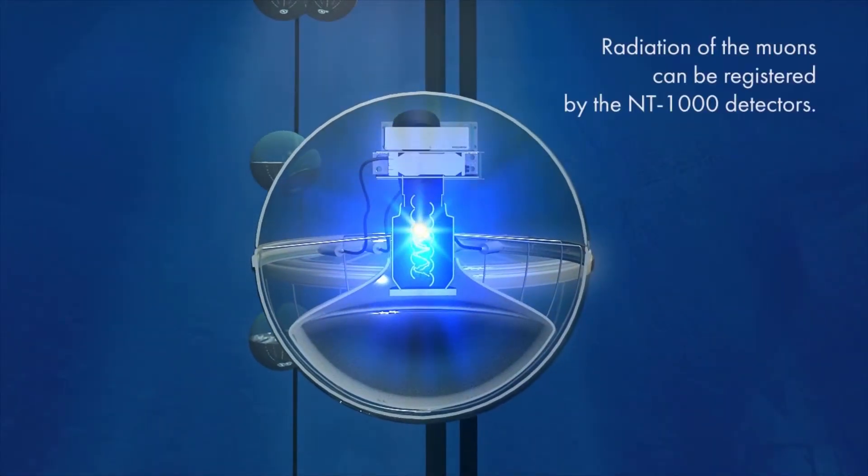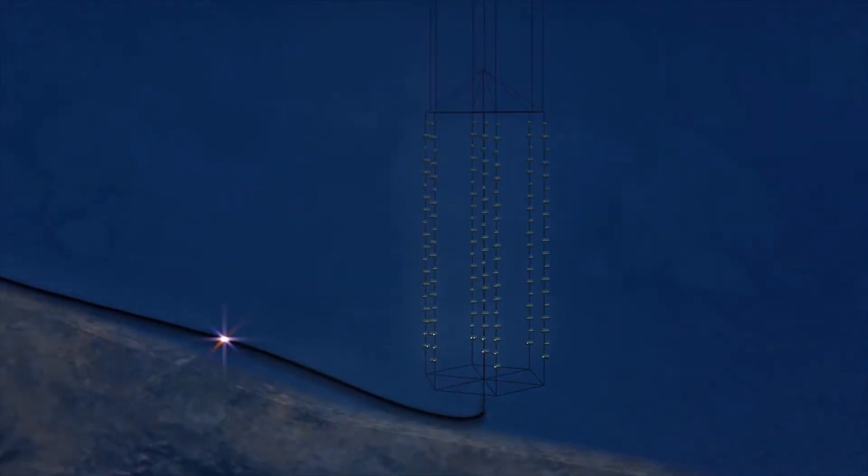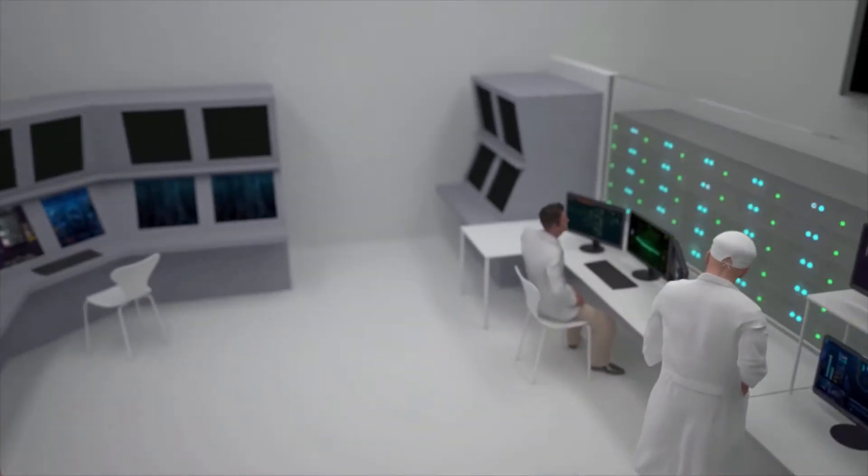The heart of the optical module is the photomultiplier, which detects individual photons and generates electrical impulses, which are moving along the underwater cables and up into the data storage system.